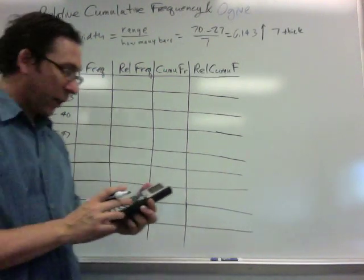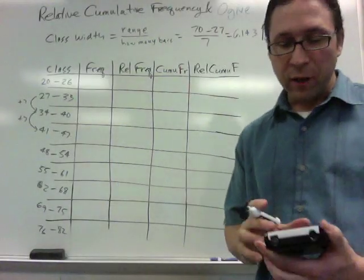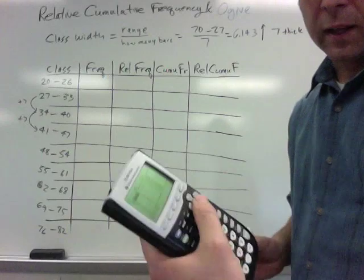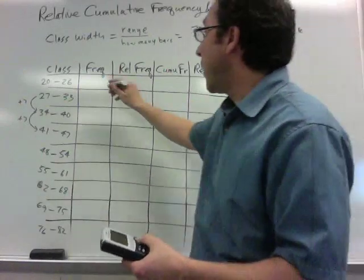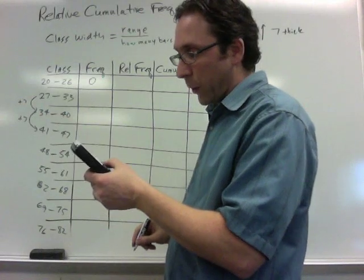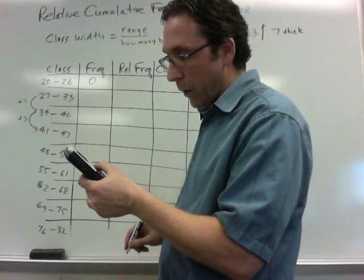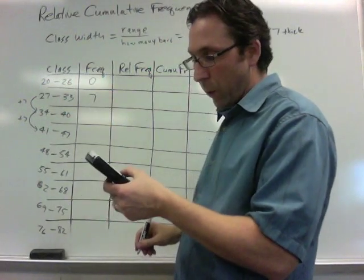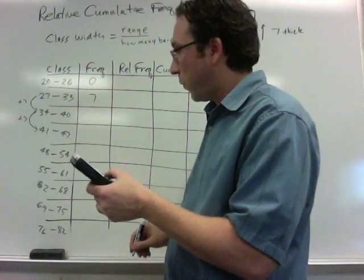Now once it's done we need to find out how many are in each category. And that's kind of nice to have the list in order, because now I can just look at my list and go down and find out how many are in this range. There's 0. Between 27 and 33, there are quite a few. There were 7 signers.